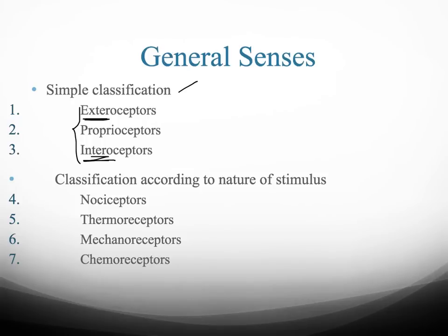The other type of classification is according to the nature of the stimulus. We can classify it into nociceptors, thermoreceptors, mechanoreceptors, and chemoreceptors. We're going to discuss these types of stimulus.